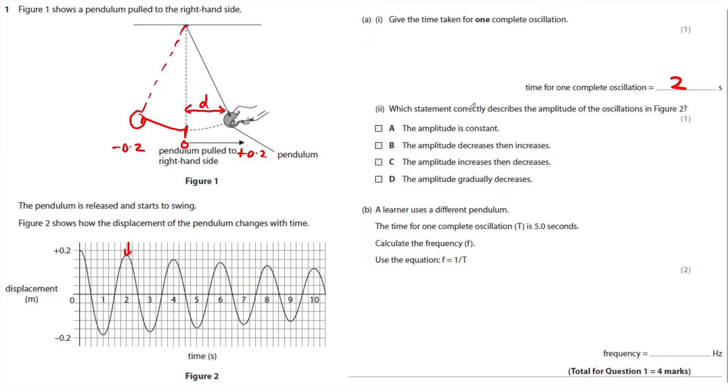Which statement correctly describes the amplitude of the oscillations in figure one? I would not read these statements. I'd look to see what happens to the amplitude first. And the amplitude is the maximum displacement from the mean position. And you can see the amplitude is getting steadily less as the time increases. Which means it has to be D.